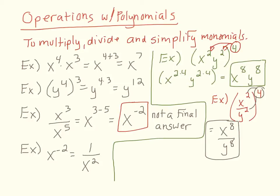And our very last property is the zero exponent property. So let's say we have an expression such as z raised to the 0. The rule is that anything raised to the 0 power is just 1. And those are going to be our properties for exponent values that we'll be using in this section. Alright, let's practice simplifying some monomials.